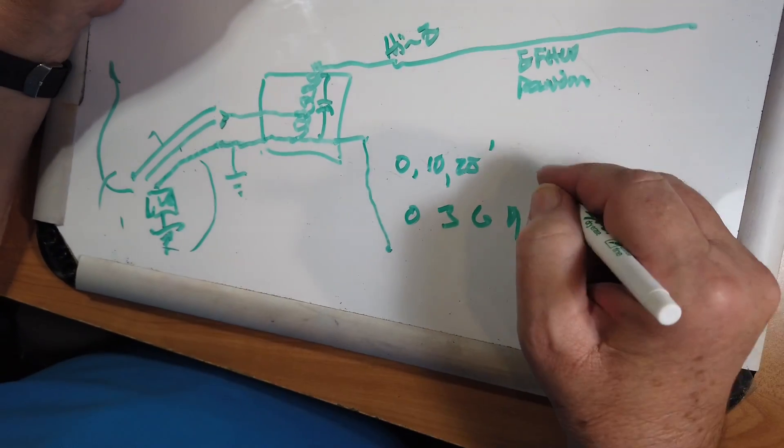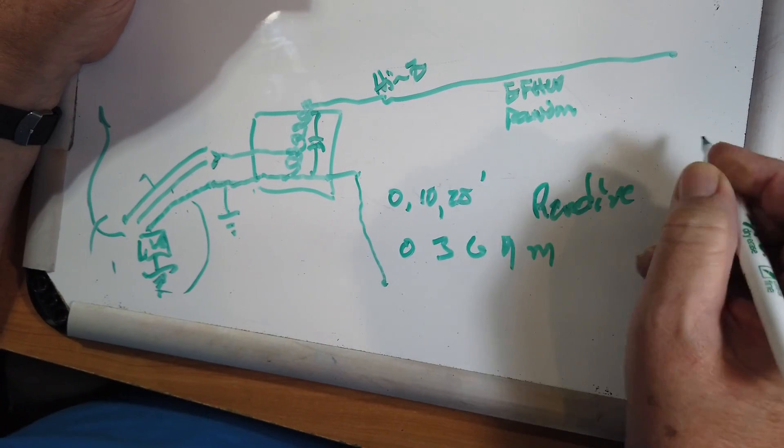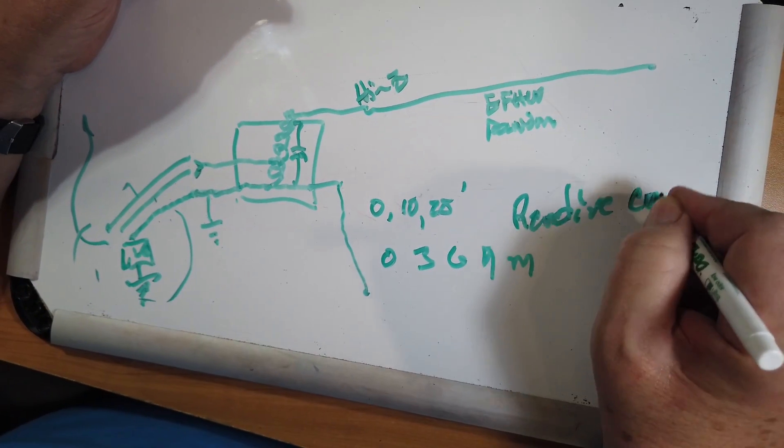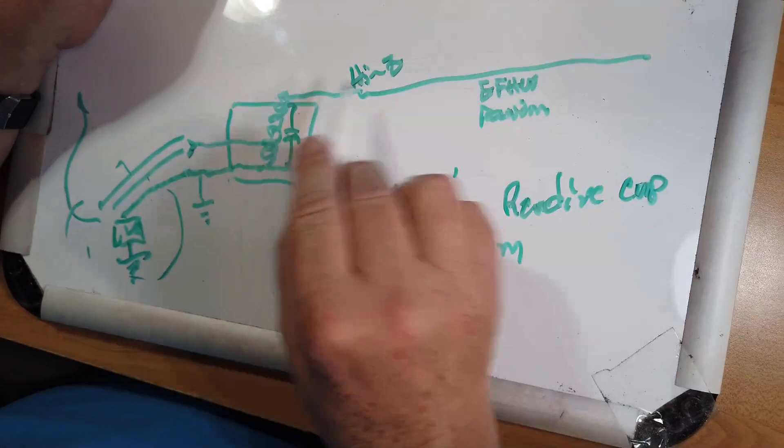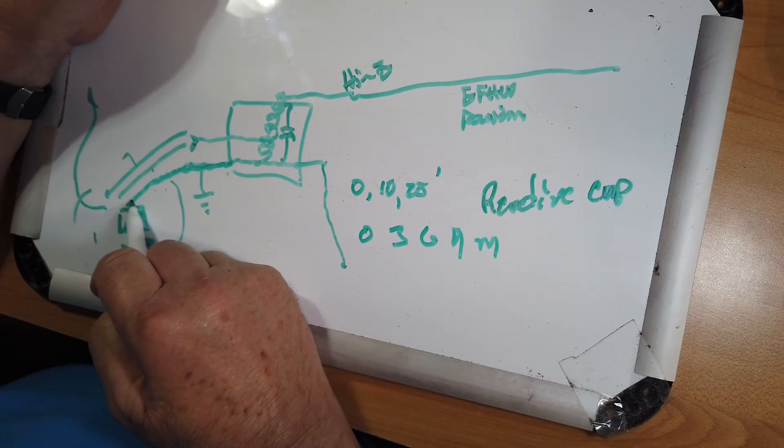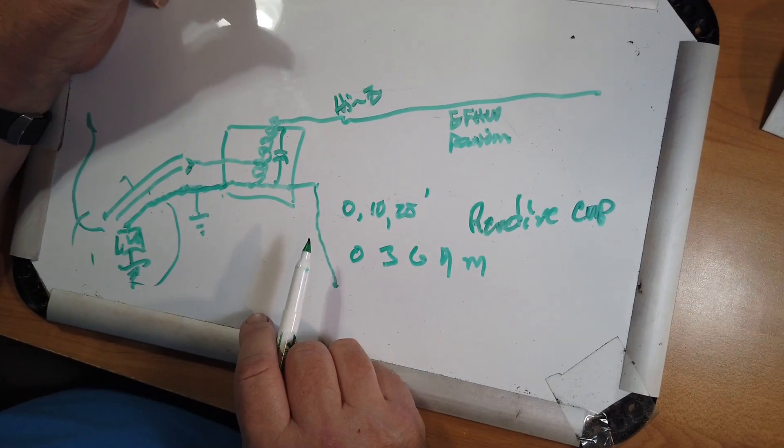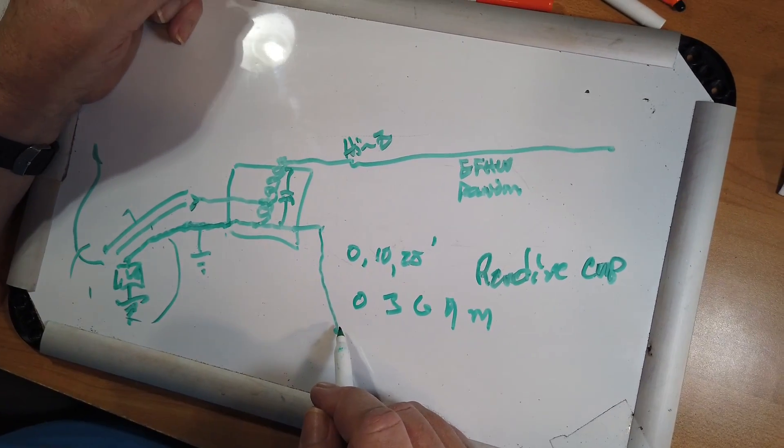Now counterpoise is actually a reactive something, usually capacitance, in a wire to give this thing something to work against. Often times, just this connection to ground is good enough as a counterpoise.